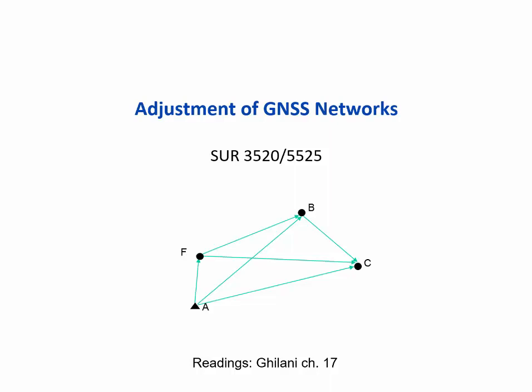Global Navigation Satellite Systems, short GNSS, are extensively used for a wide range of surveys, including property surveys, topographic mapping, and construction stakeout, as well as for the establishment of high-quality control points that are often used in combination with terrestrial measurements.